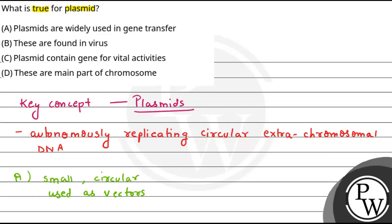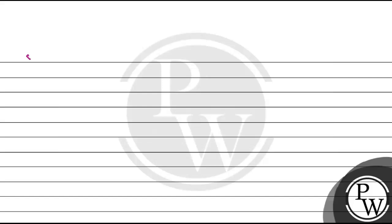Now, option B is the incorrect statement because plasmids are sometimes found in prokaryotic and eukaryotic organisms, but they are not known to be found in viruses.